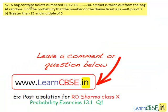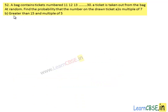Q52. A bag contains tickets numbered 11, 12, 13, so on up to 30. A ticket is taken out from the bag at random. Find the probability that the number on the drawn ticket is a multiple of 7, greater than 15 and multiple of 5.